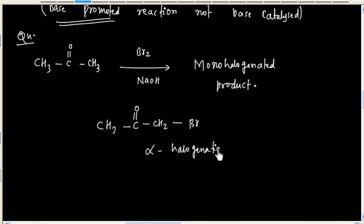In this lecture, we discussed the mechanism of alpha-halogenation in basic medium. The mechanism consists of two steps: the first step is the slow step and the second step is the faster step. The first step is reversible because the enolate ion is a stronger base than OH⁻, so the reaction mainly lies towards the reactant side. Once the enolate ion is formed, it reacts with halogen in the second step, which is not reversible and goes only towards the product side.